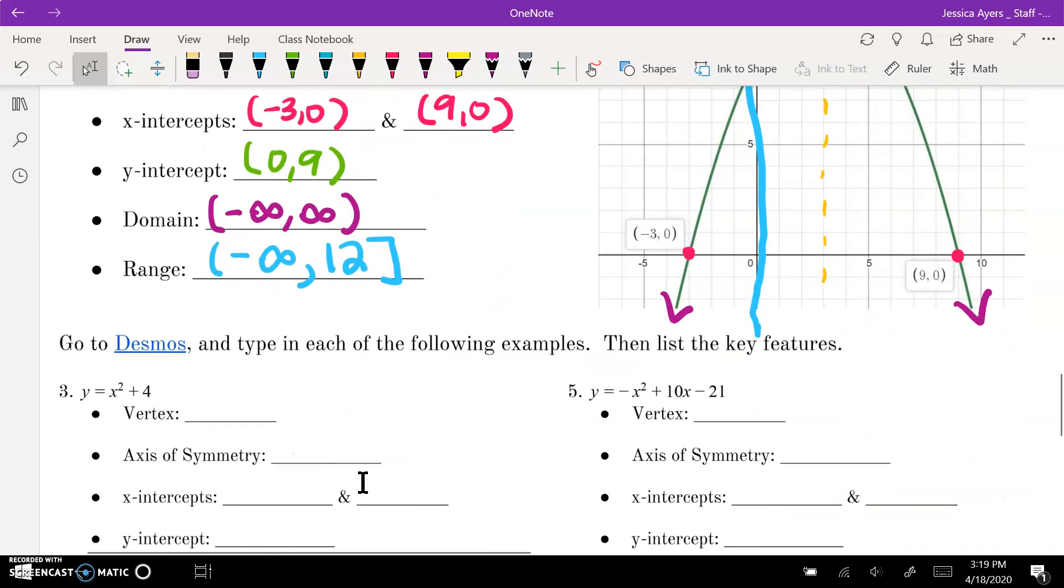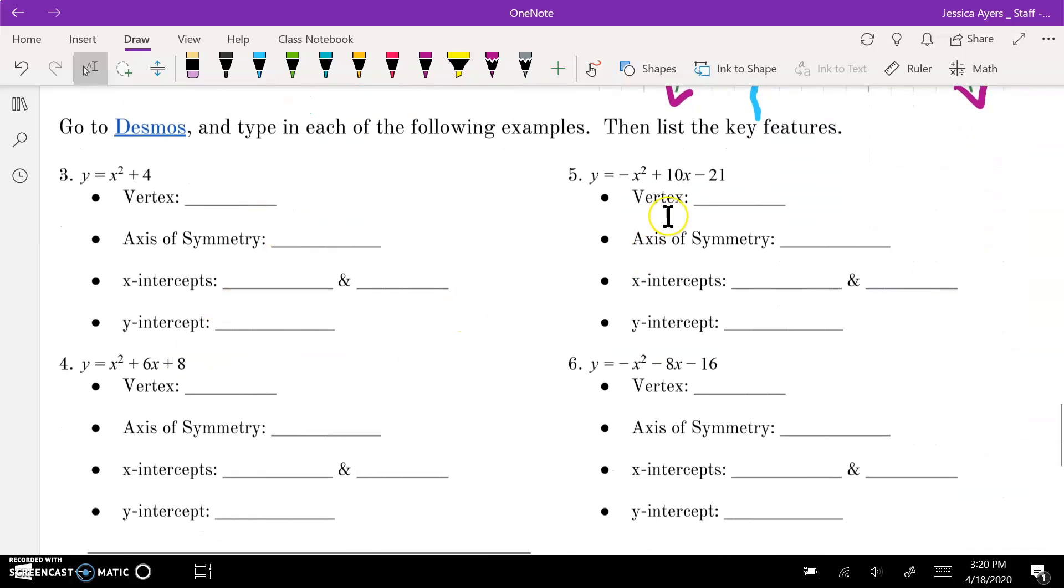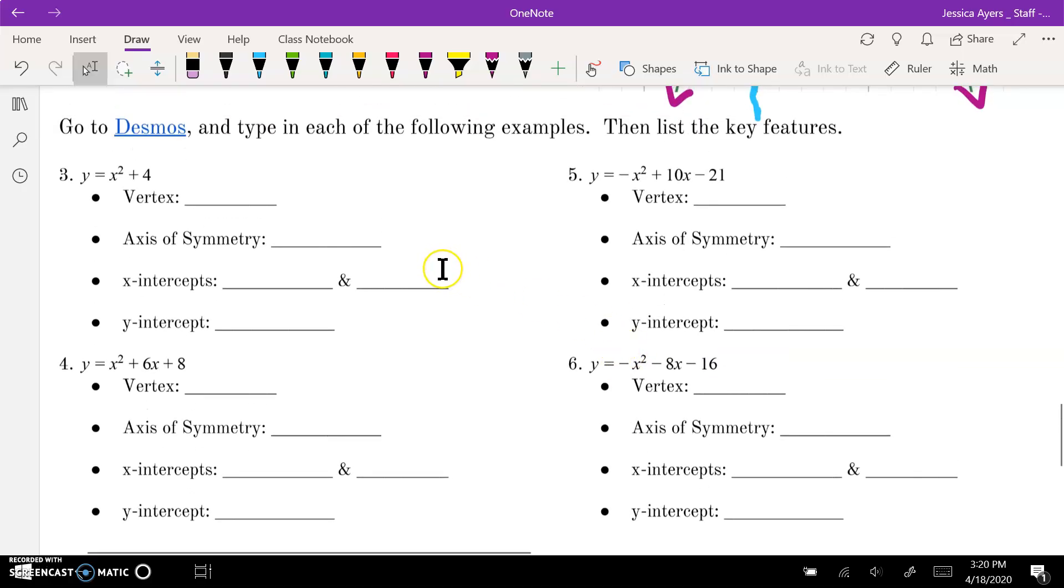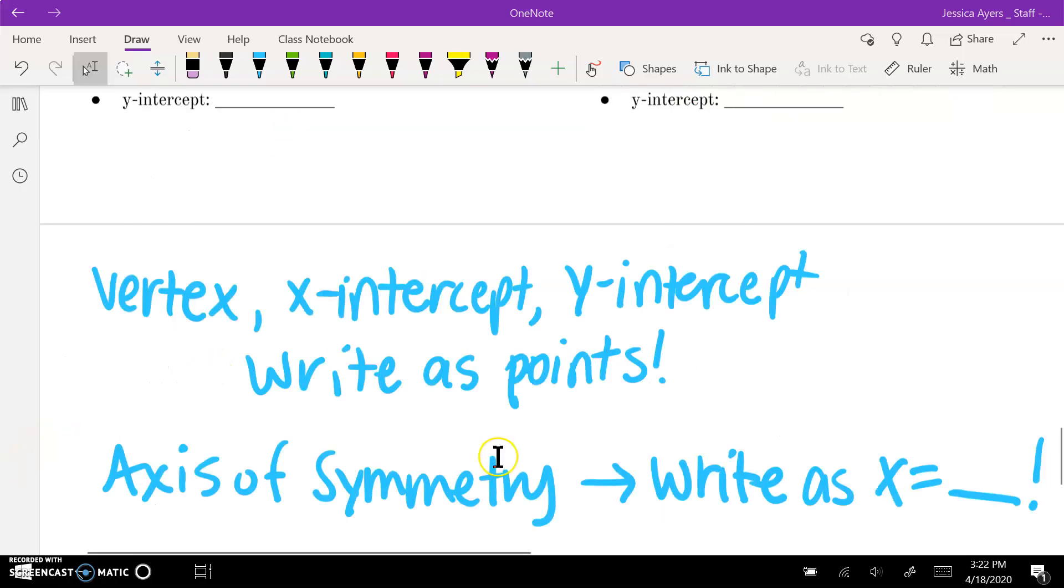So now you're going to go to Desmos. You're going to type in each of these four equations down here for 3, 4, 5, and 6. And then you will list all of their key features. Remember when you're writing your key features that the vertex, x-intercept, and y-intercept are all written as points. The axis of symmetry will always be written as x equals a blank, whatever the x value was in your vertex. Once you've completed this, go to the answer key in Canvas to see that you got your answers correct.